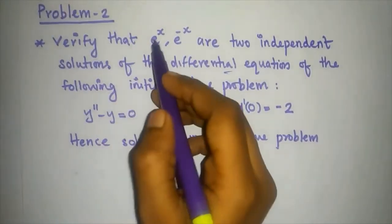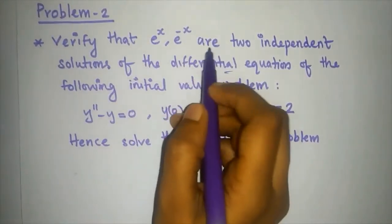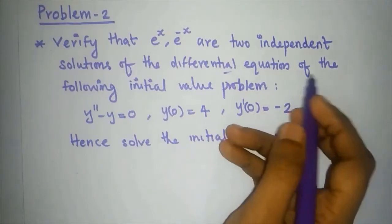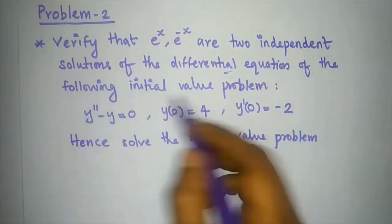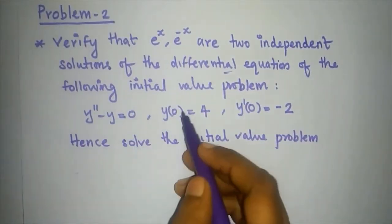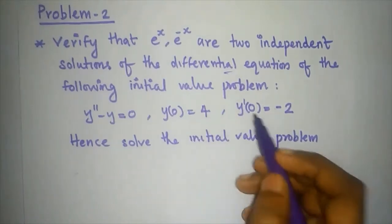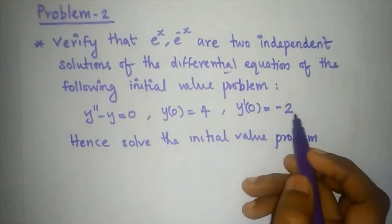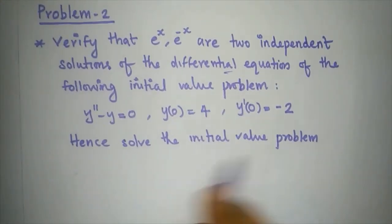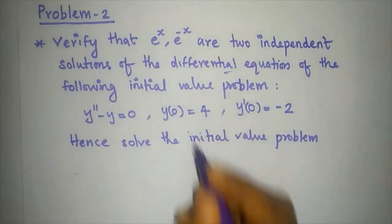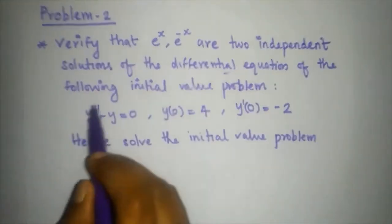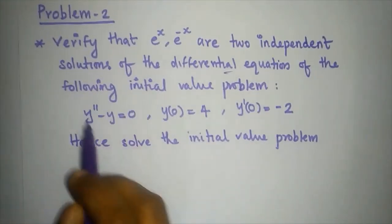So the question is: verify that e^x and e^(-x) are two independent solutions of the differential equation of the following initial value problem — y'' minus y equal to 0, y(0) equal to 4, y'(0) equal to minus 2. Hence, solve the initial value problem.